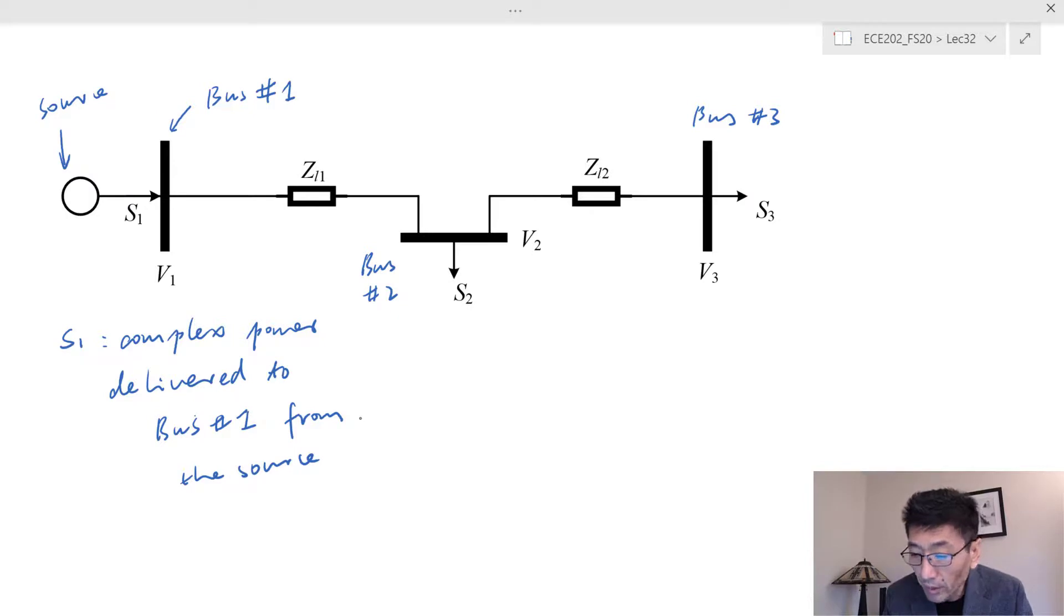This Z_L1 is the line impedance per phase, so make sure you treat this as per phase. If you try to calculate the power absorbed by the line impedance, make sure you multiply them by three, because in this line diagram it only represents one phase.